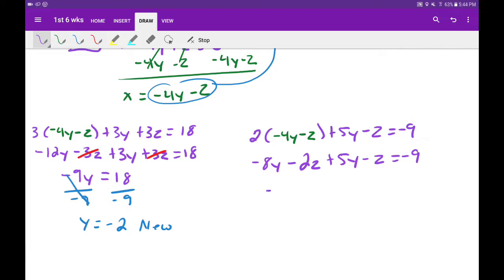Condense it again. Negative 8y and 5y make negative 3y. Negative 2z minus z makes negative 3z. And that's going to equal negative 9. This one here is my other new equation.